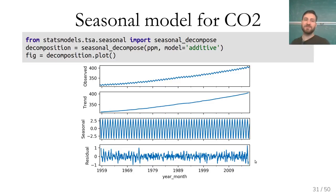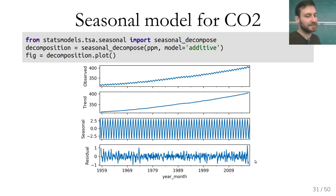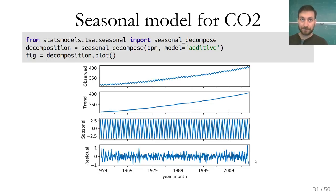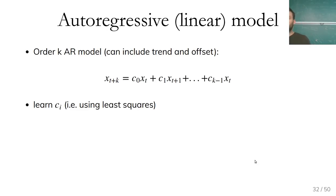If you expect multiple seasonal components, it might be a good idea to model them explicitly. Facebook Prophet is a tool that specifically handles multiple seasonal components. The seasonal decompose from statsmodels is essentially just running filters and not really learning. I'll discuss something that actually learns in a bit.